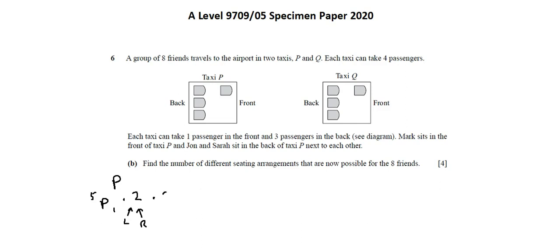Again, I'm going to multiply by two, because the two seats that they occupy could either be John, then Sarah, or Sarah, then John. Two different options. So, 5P1 times two times two.